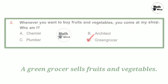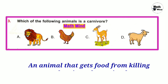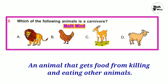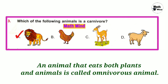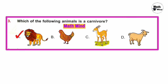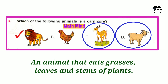Question number 3: Which of the following animals is a carnivore? A carnivorous animal kills and eats other animals — so lion, option A, is correct. Omnivores eat both plants and animals — option B, hen, is an omnivore. Herbivorous animals eat grasses, leaves, or stems of plants — option C, deer, and option D, goat, are both herbivorous.